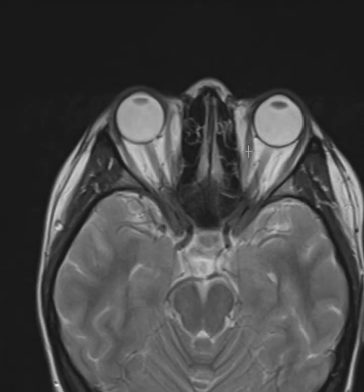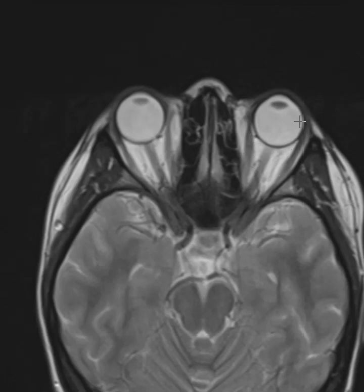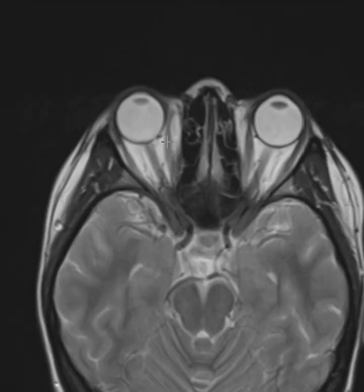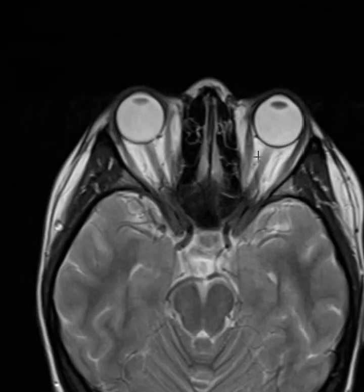Patients can also have problems with the extraocular muscles. These dark areas here — they look a bit like the optic nerve — are the muscles. There's a medial rectus muscle and a lateral rectus muscle; they attach to the eyes and make the eyeballs move medially or laterally. Sometimes they can be inflamed, or you can have masses or pseudo-masses in the orbits that can cause visual disturbance. But the extraocular muscles here are normal in size — no thickening, no inflammation, no orbital mass. The optic nerves look very good, so we're coming up empty so far.